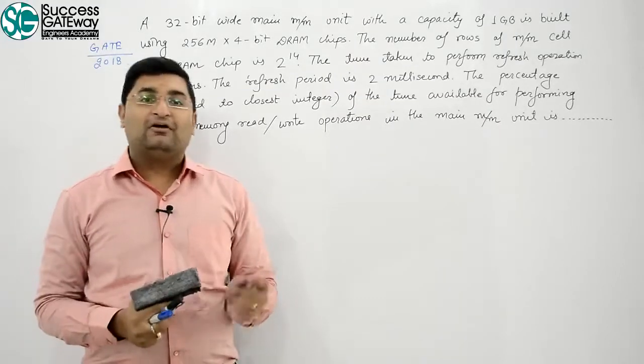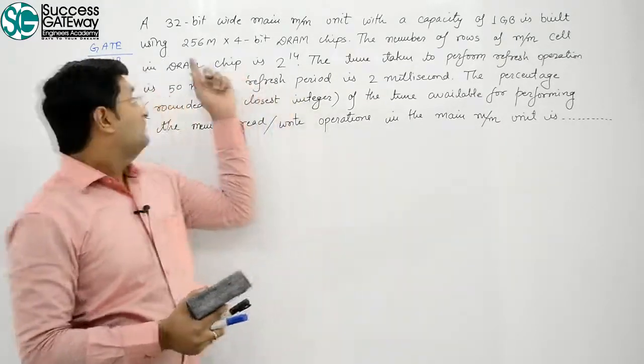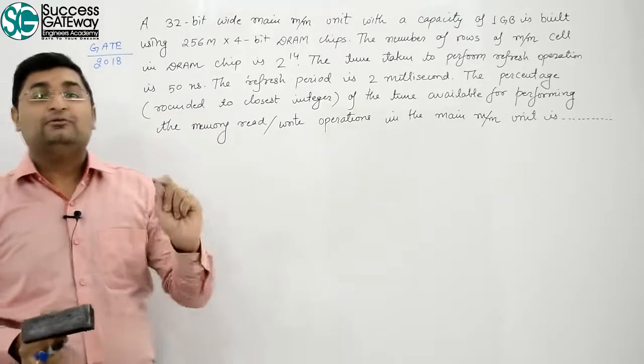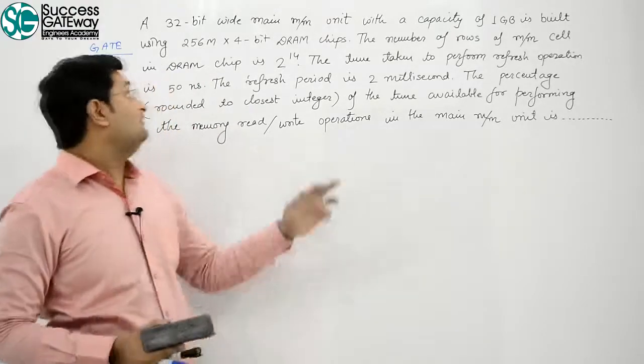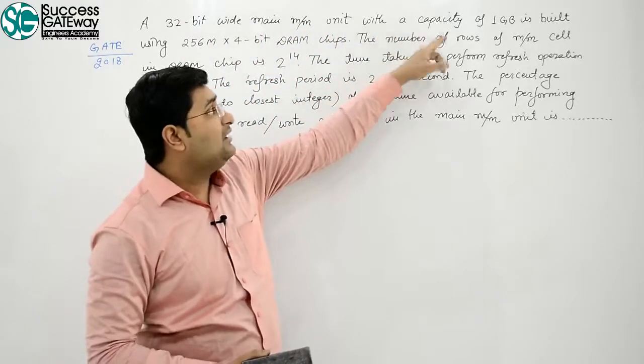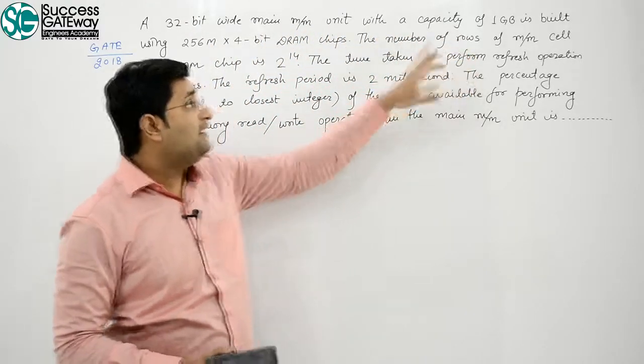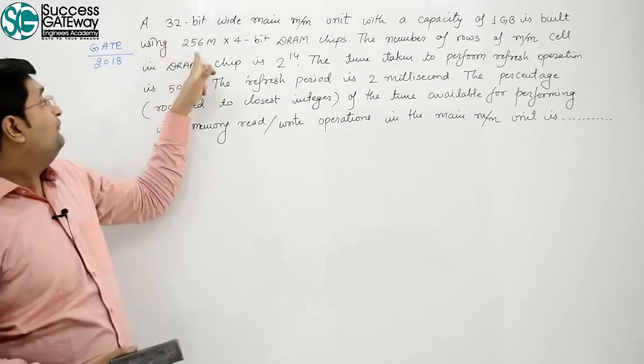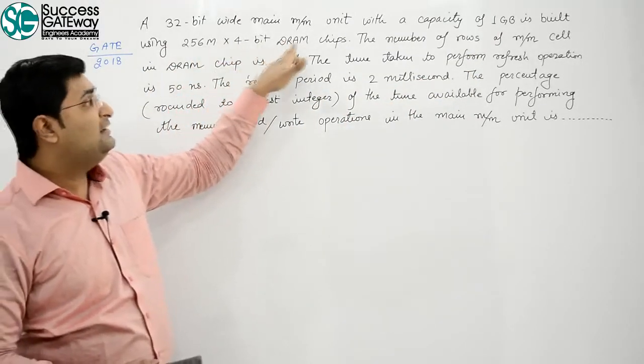Now next example on DRAM is this, it is a GATE 2018 question. A 32-bit wide main memory unit with a capacity of 1 gigabyte is built using 256M into 4-bit DRAM chips.